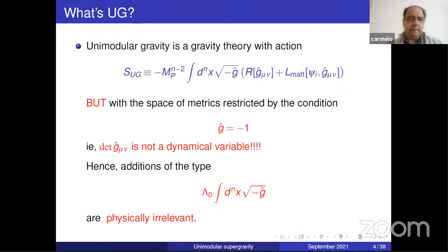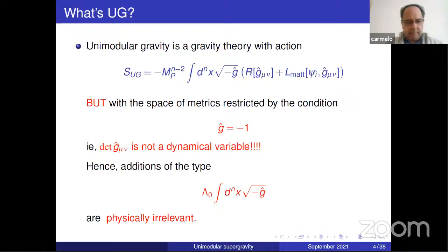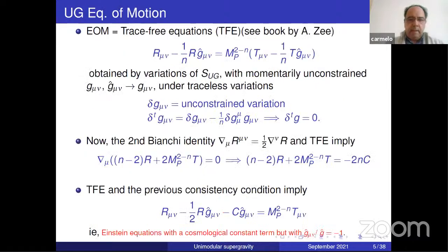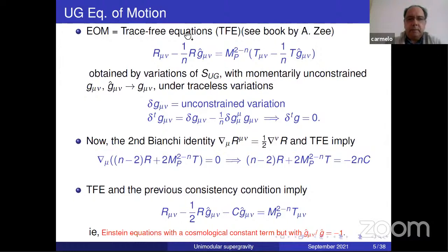What is unimodular gravity? Unimodular gravity is a theory with the standard action of general relativity, but with the constraint that the determinant of the metric is constant — equal to minus one. So the determinant is not a dynamical variable, unlike in standard general relativity. Additions of a cosmological constant term are physically irrelevant. Classically, the equations of motion are the so-called trace-free or Einstein traceless equations, which were actually put forward by Einstein before the standard general relativity equations. They are obtained by varying the action under variations of the metric constrained by the unimodular condition.